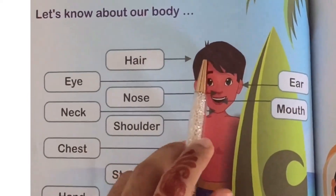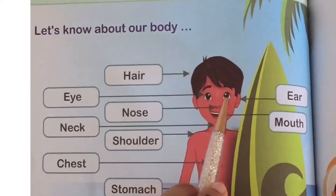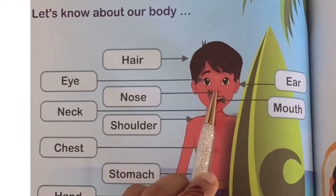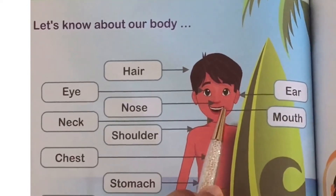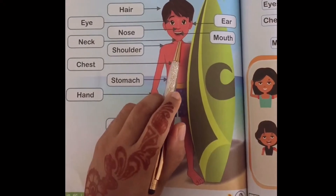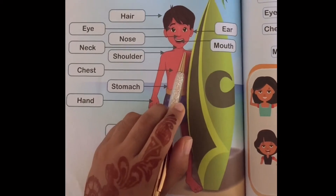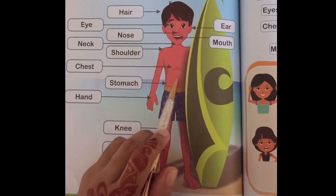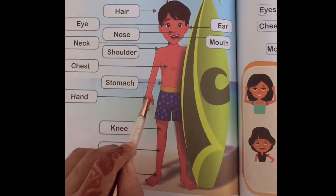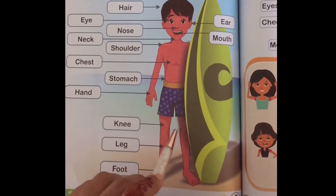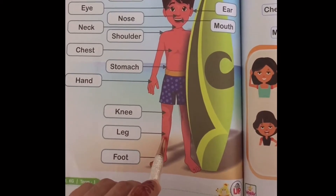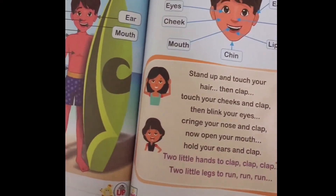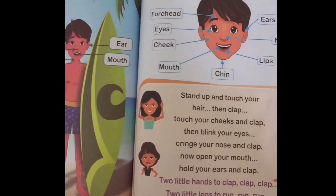So first, hair — this is our hair. Eyes — we have two eyes. Then next, nose — this is our nose. This is our mouth. This is neck, this is shoulder, this is chest, this is stomach, this is hand, this is knee, this is leg, this is foot.